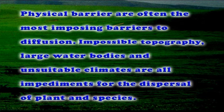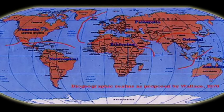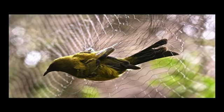The oceanian realm is dominated by tropical forests. Physical barriers are often the most imposing barriers to diffusion. Impossible topography, large water bodies, and unsuitable climates are all impediments to the dispersal of plant and animal species. World biogeographic realms are geographical regions out of which particular assemblages of plants and animals evolved and dispersed. Based on relative complete compilation of species within well-studied groups, biogeographers have identified six different realms within which species tend to be closely related. The world biomes include forest biomes, savanna biomes, grassland biomes, desert biomes, and tundra biomes.